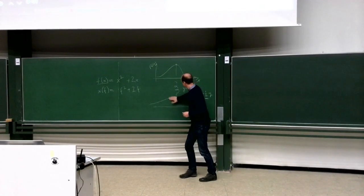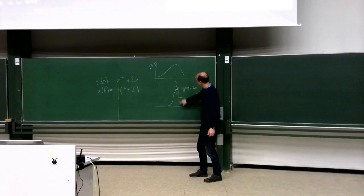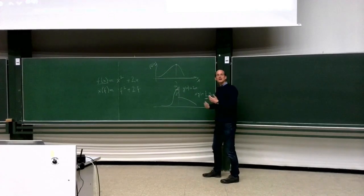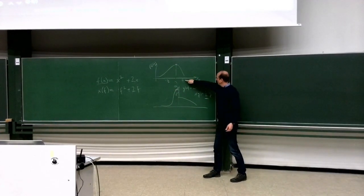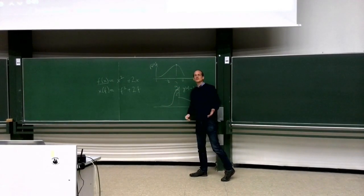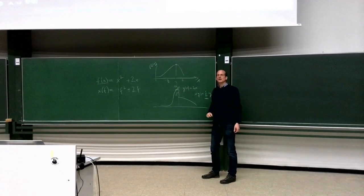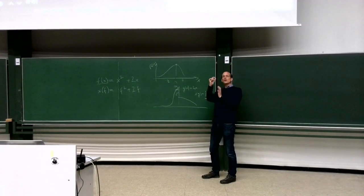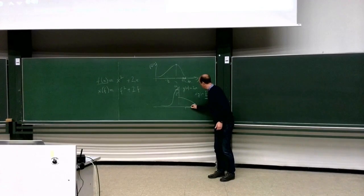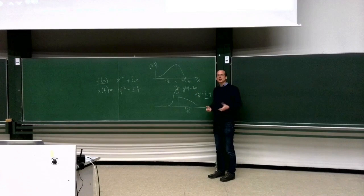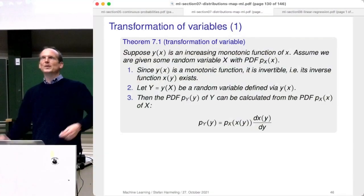For a non-uniform stretch — squashing one part and stretching another — the density increases where things are concentrated and decreases where things spread out. You need to multiply by the local derivative. In higher dimensions the Jacobian tells you about volume change; here in 1D it tells you how a line segment dx is transformed to dy. That's why the transformation formula is as it is — you re-transform with the first derivative.